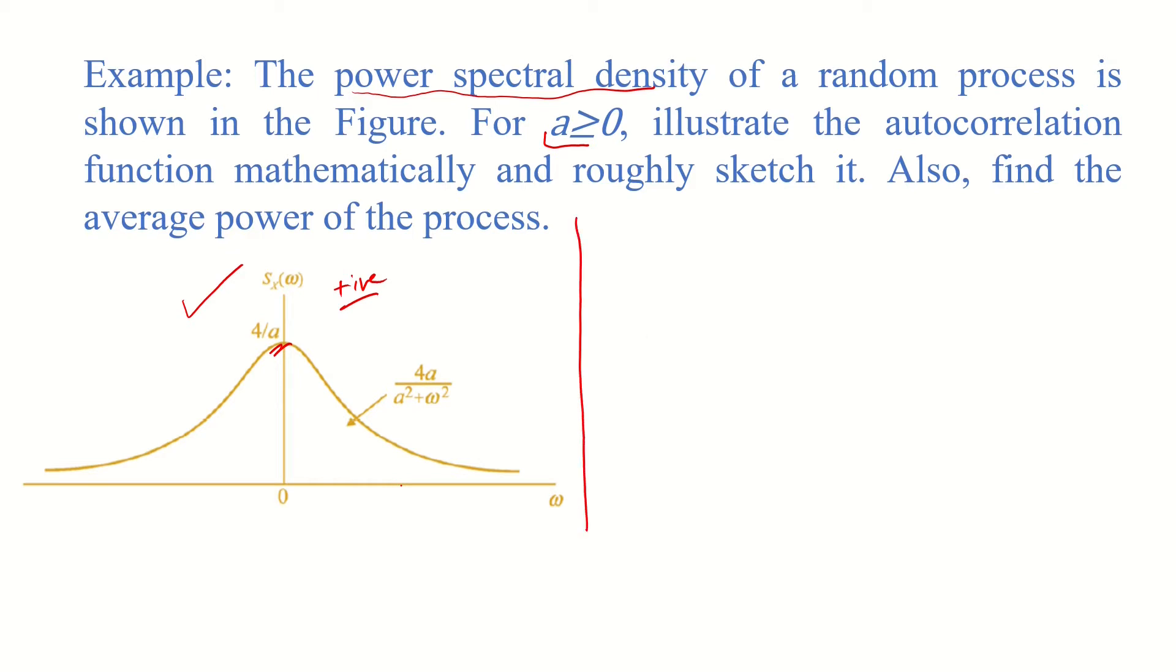In order to solve this problem, we know that the autocorrelation function Rx(τ) is a Fourier transform pair of the PSD Sx(ω). So what we need to do is find the pair of 4a over a squared plus omega squared of the PSD.